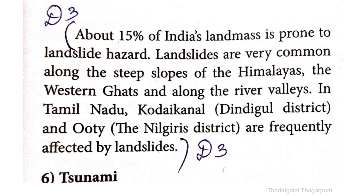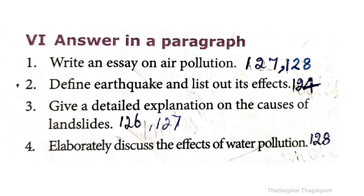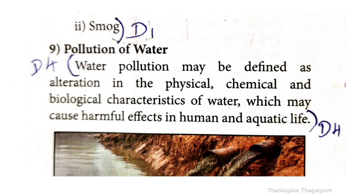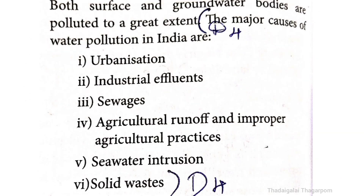Fourth question: Elaborately discuss the effects of water pollution. The answer is on page 128. Water pollution may be defined as the contamination affecting aquatic life. The major causes of water pollution in India are: urbanization, industrial effluents, sewage, agricultural runoff, improper agricultural practices, seawater intrusion, and solid waste.